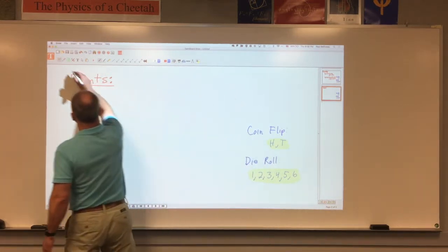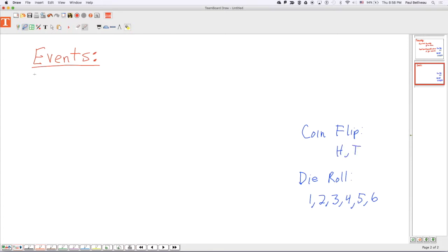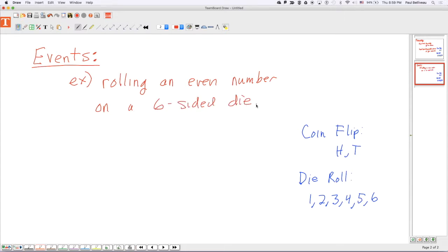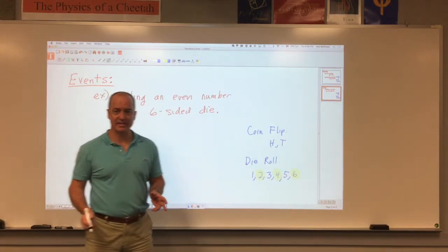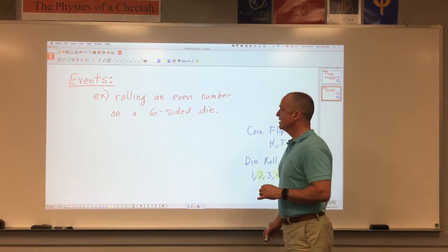an event might be rolling an even number on a six-sided die. Okay. Well, the only things in that event are two, four, and six. So, we're defining that event. That event takes up three things in our sample space. So, how do we find the probability of this event?